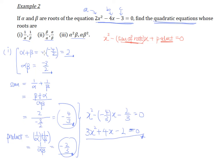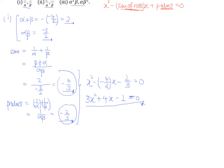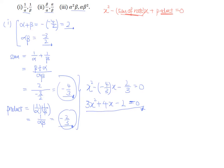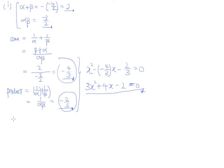For part 2, the roots are alpha/beta and beta/alpha. The sum of roots is alpha/beta + beta/alpha. By common denominator, this gives (alpha² + beta²) over (alpha·beta). Now this is not as straightforward as part 1, because we need to figure out the value of alpha² + beta².